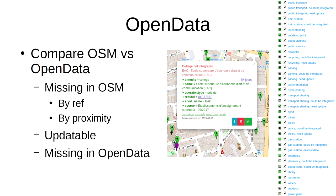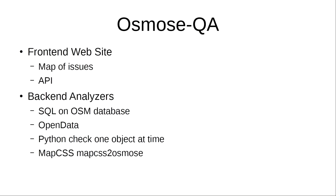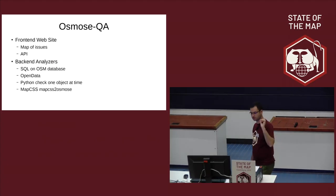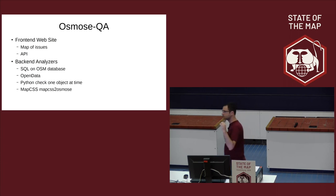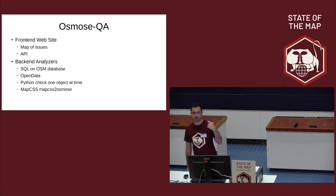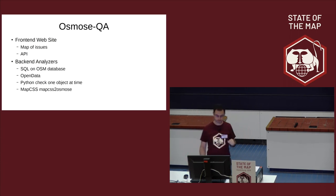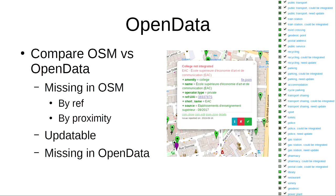In this talk, I want to focus on two things: the open data part — and the Mapillary-related aspects — and MapCSS, which is a way to write checking rules.